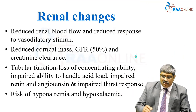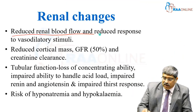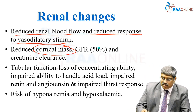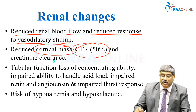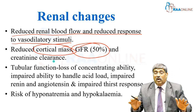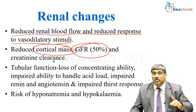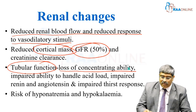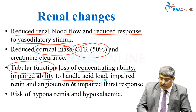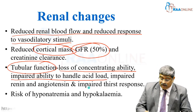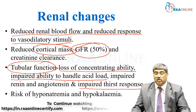There is reduced renal blood flow and reduced response to vasodilation. Renal cortical mass is reduced, GFR comes down by 50%, and creatinine clearance is reduced. The most important and difficult-to-treat function loss is tubular dysfunction: loss of concentrating ability, impaired ability to handle acid load, the renin-angiotensin system is impaired, and the thirst response is also altered.